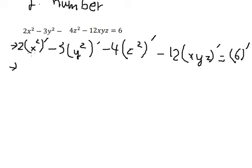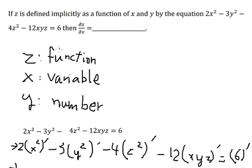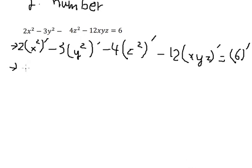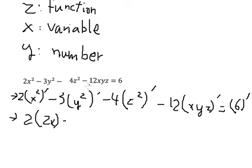Because x is a variable, that means we have to treat y as a number. The derivative of a number gives you zero.